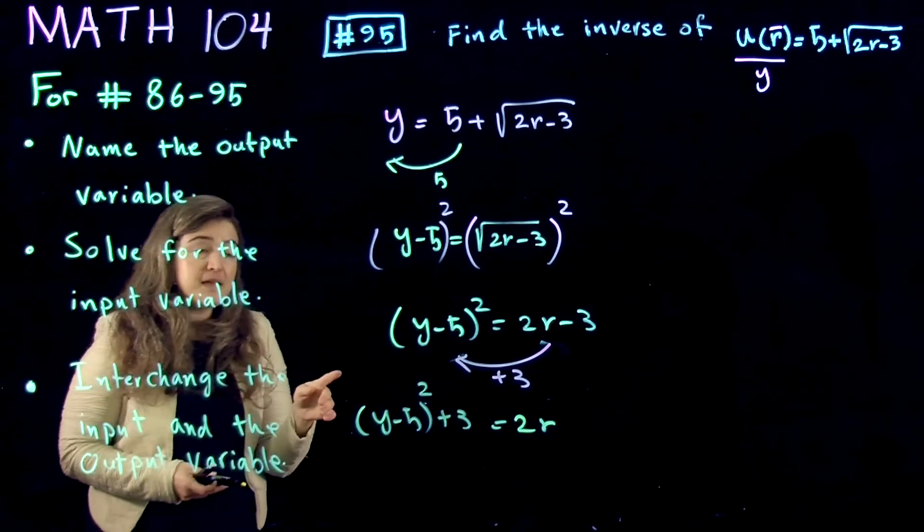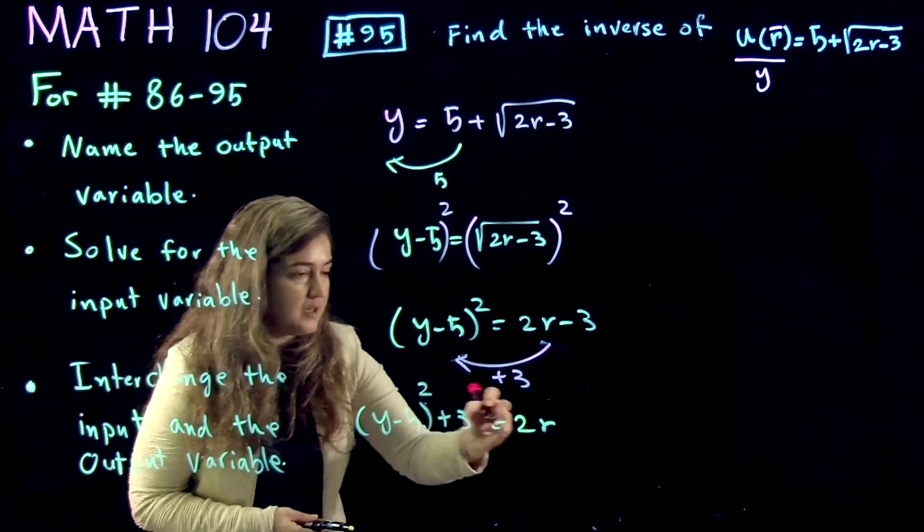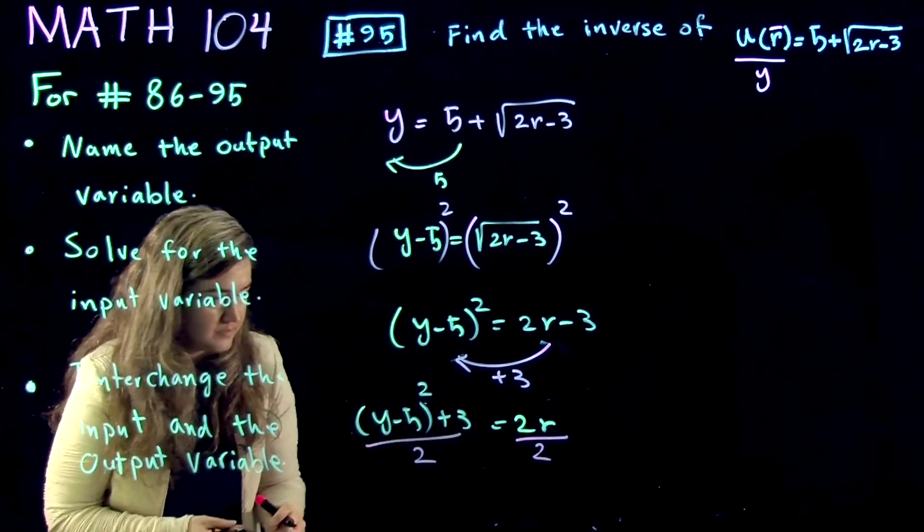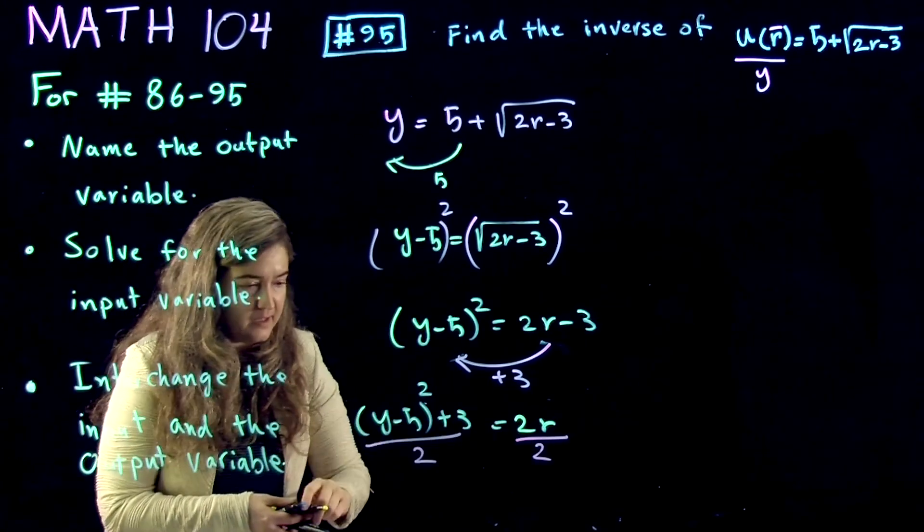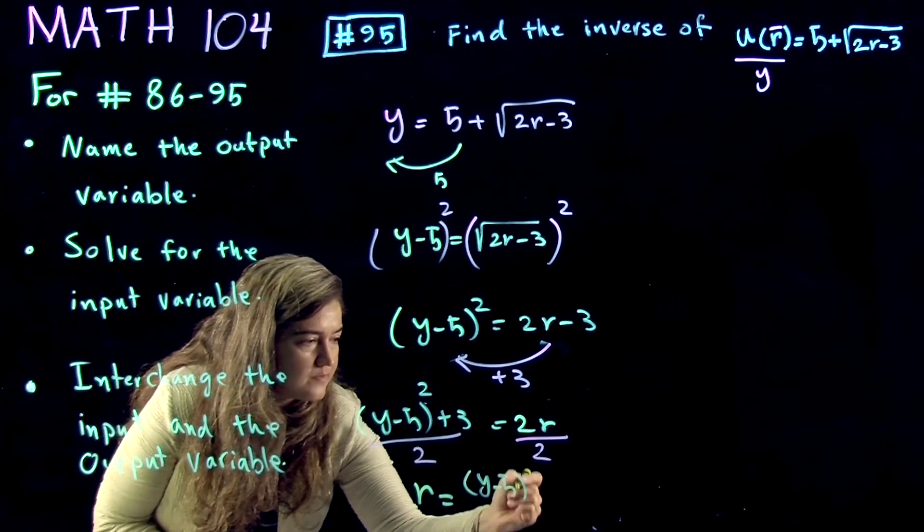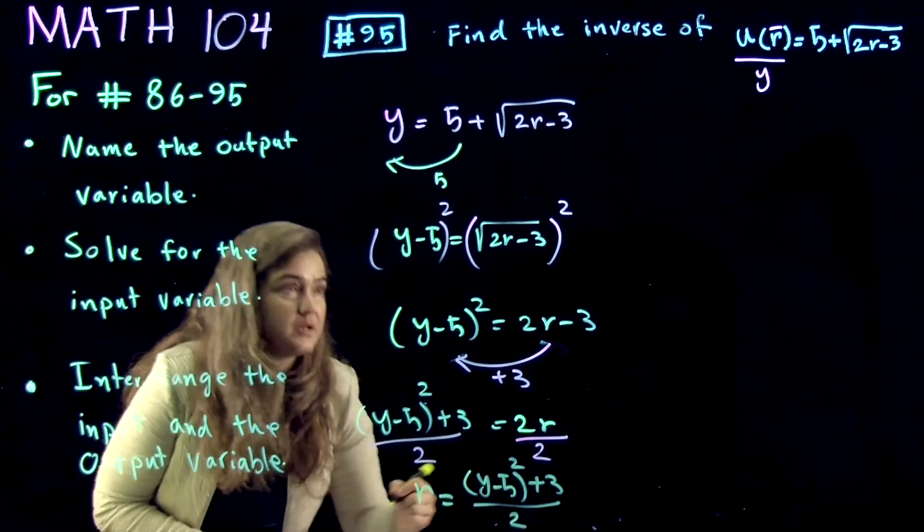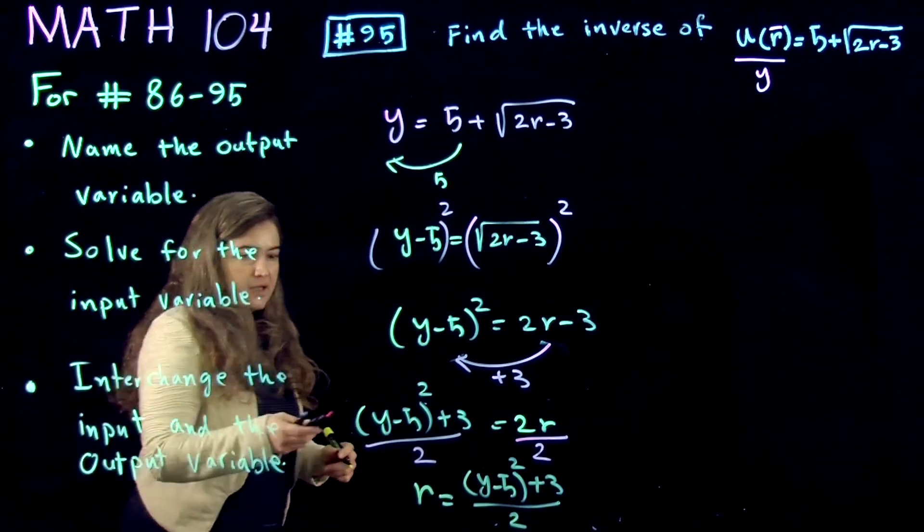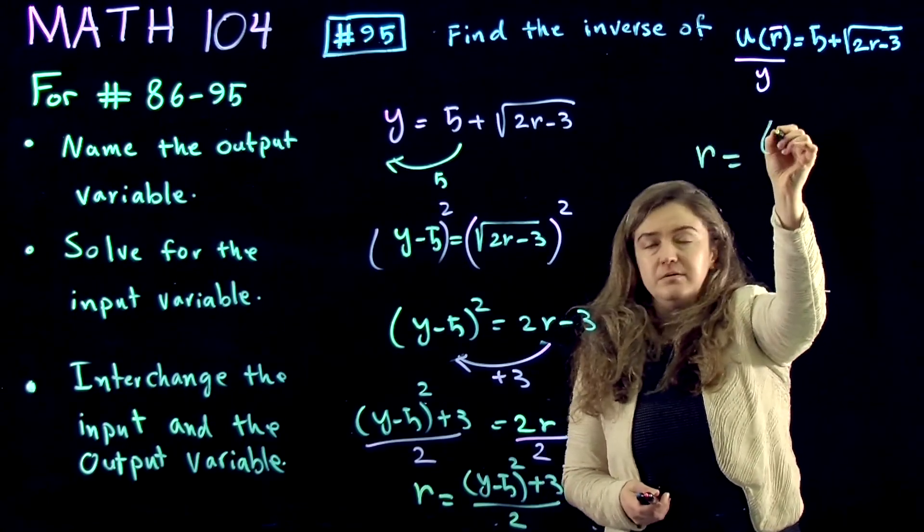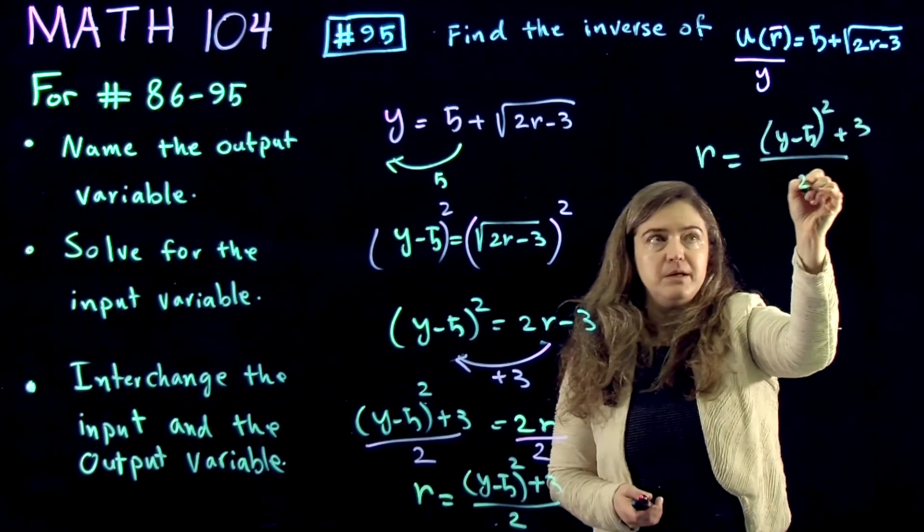The next step is to solve for r, so out of here we get r is equal to y minus 5 to the power of 2 plus 3 divided by 2. So we write this up here, r equal to y minus 5 to the power of 2 plus 3 divided by 2.